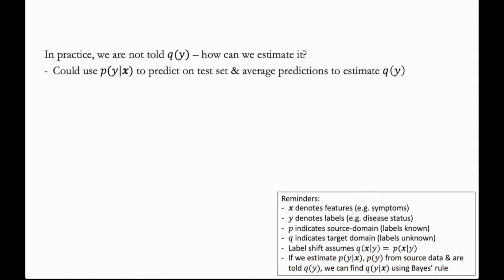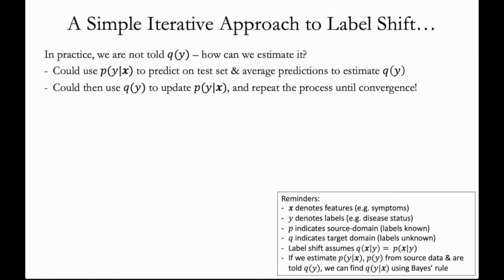Well, we have access to the predictor p(y|x). So one thing that we might think to try is to simply use that predictor as is on the test set to estimate the class proportions. But once we have those estimated class proportions in hand, we can then update p(y|x) using Bayes' rule as we saw before. And then with the updated q(y|x), we could once again predict on the test set to re-estimate q(y). And then we repeat the process until convergence, giving a simple iterative approach to estimate q(y).